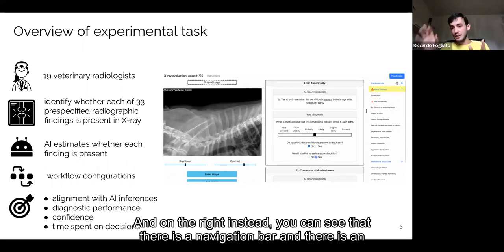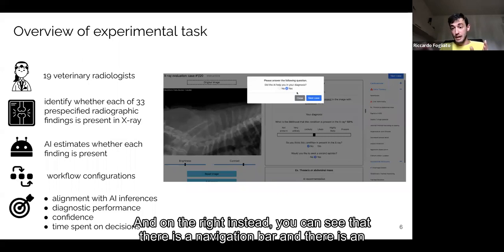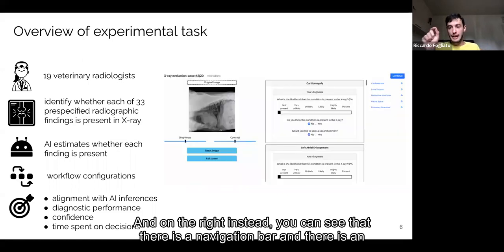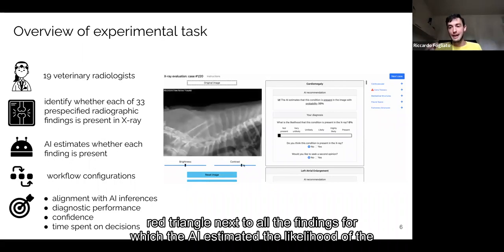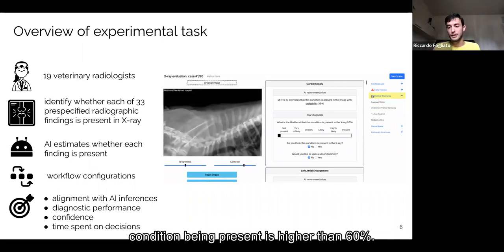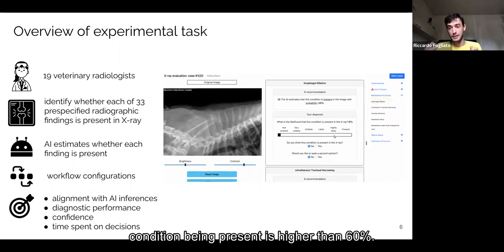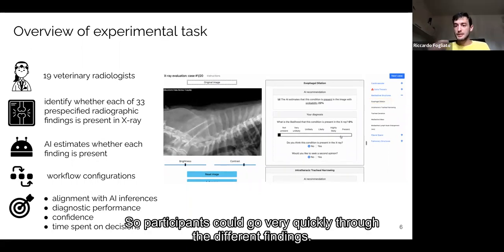And on the right, you can see that there is a navigation bar, and there was a red triangle next to all the findings for which the AI estimated the likelihood of the condition being present be higher than 60%. So participants could go very quickly through different findings.